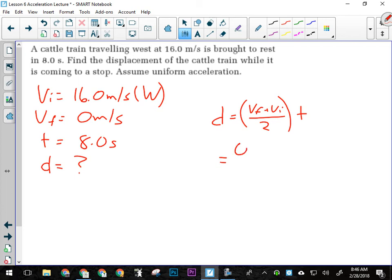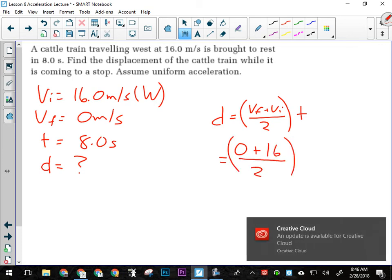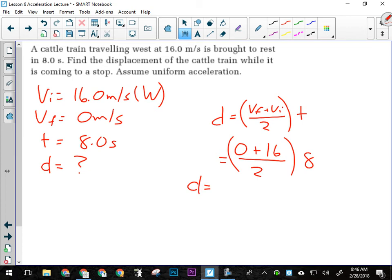So D is going to equal zero, because that's what VF was, plus VI, which is 16, divided by two times the time, which was eight seconds. So 16 over two is eight, times eight is 64. And what direction is that going to be?